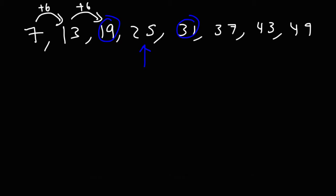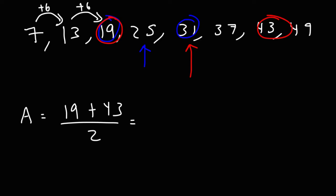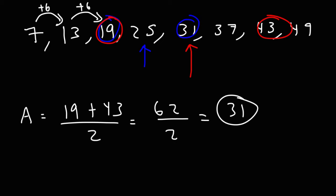Let's try one more example. Let's find the arithmetic mean between 19 and 43 — the answer is going to be 31. If we add 19 and 43 together and divide by 2: 19 plus 43 is 62, and 62 divided by 2 is 31. So the arithmetic mean is simply the middle number between two numbers in an arithmetic sequence.